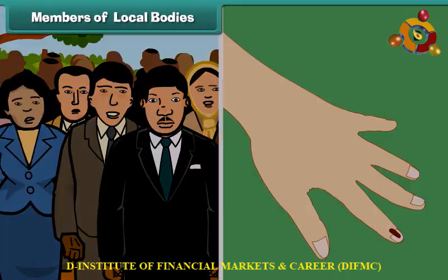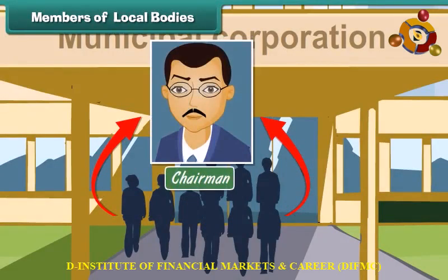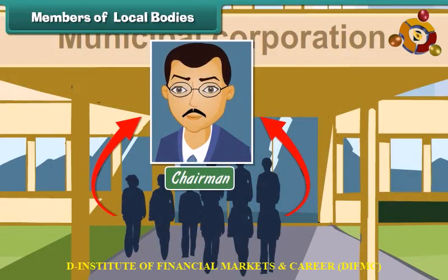The elected members of a municipal committee or corporation elect their chairman. In big cities, the chairman is called the mayor. He is the head of a municipal committee or corporation.